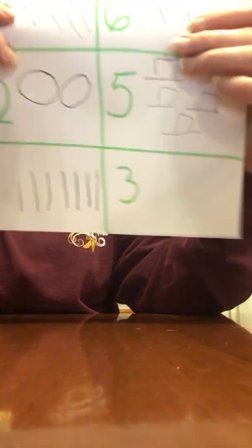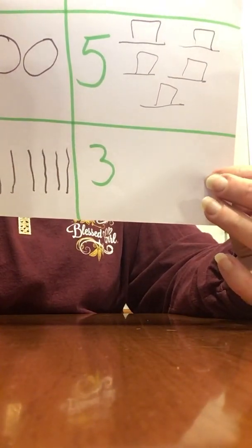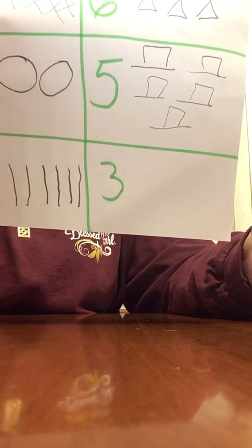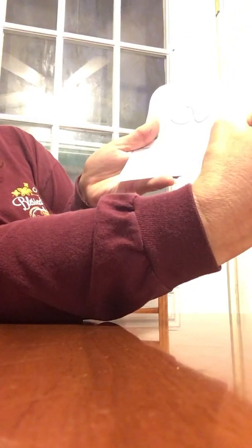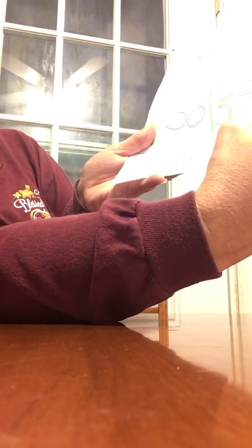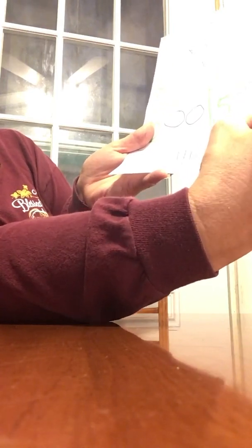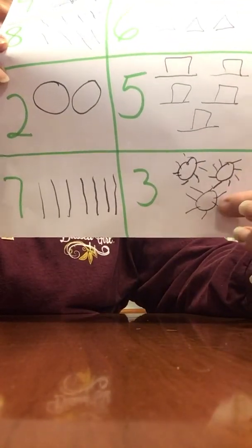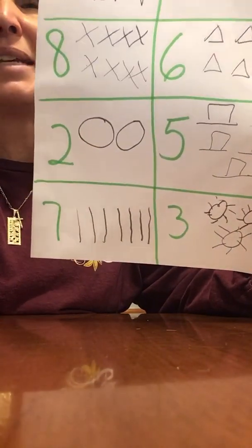Great job. What is our last number? Our last number is number three. Three. I'm going to draw three sunshines. One, two, you can probably draw much better than me and that's okay. Three. Three sunshines. One, two, three. Thank you for counting with me today.